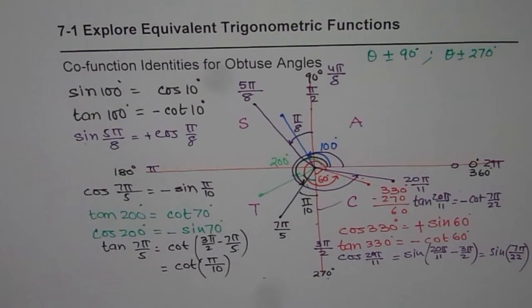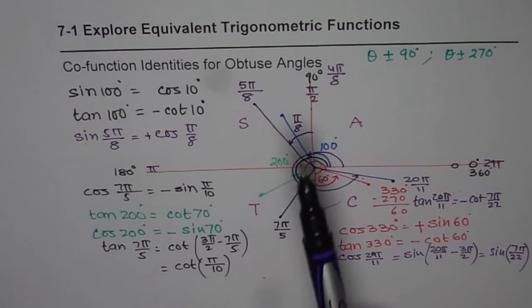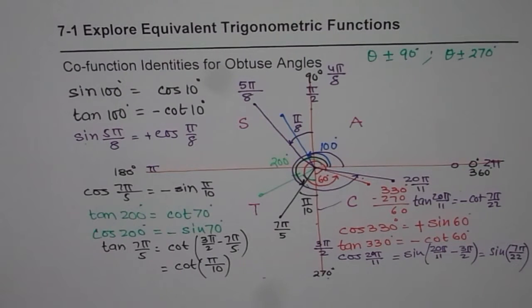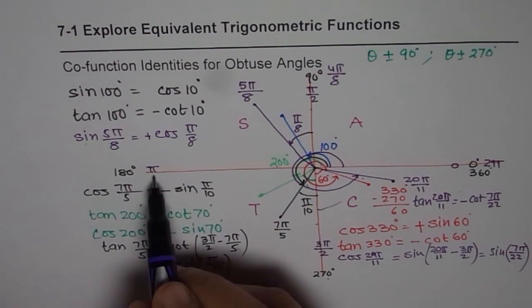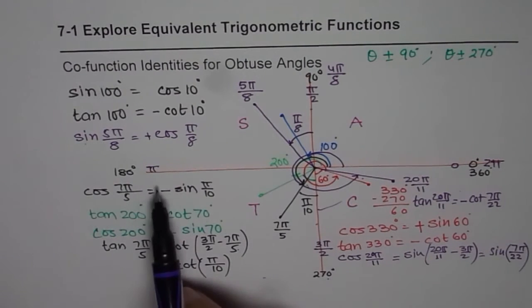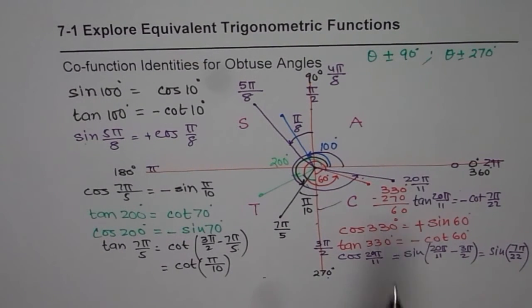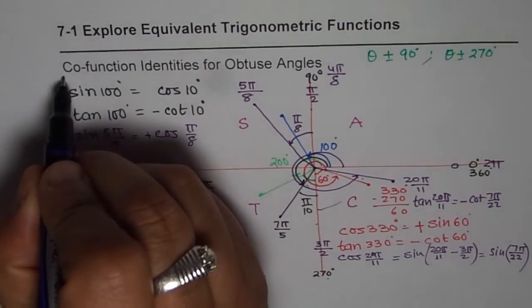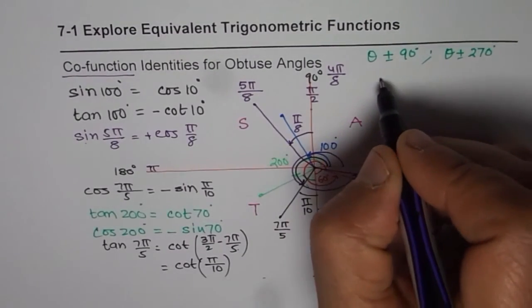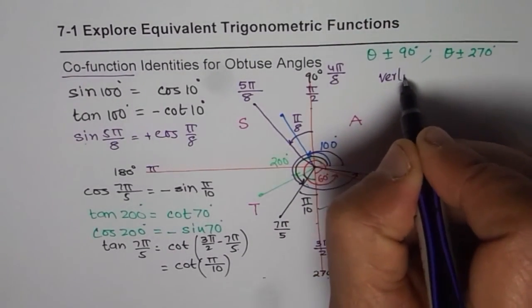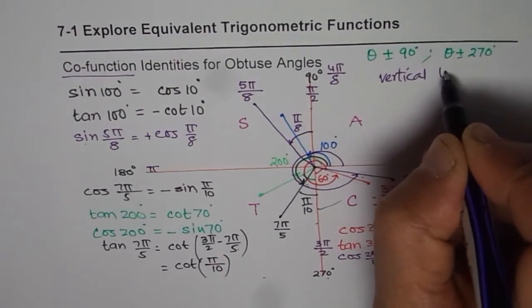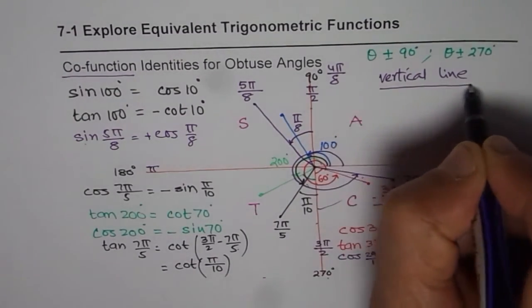Second part is, you have to check the angle with reference to vertical line to write co-function identities, right? Not with the horizontal line. When you are checking angle with horizontal line, it is related acute angle. So core functions are angles written with vertical line.